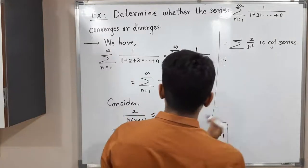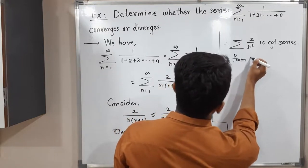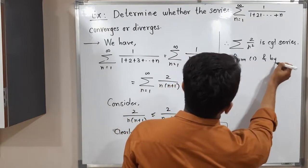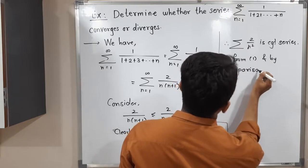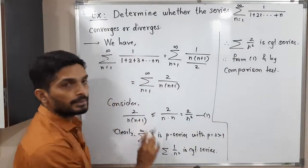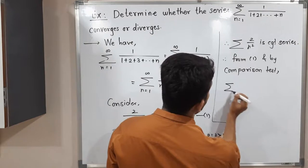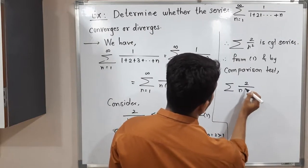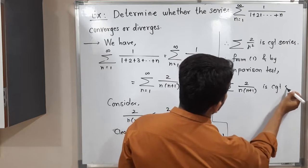Let me call this equation (1). Therefore from (1) and by comparison test, as this series is convergent and the lower series is also convergent, summation 2/(n(n+1)) is a convergent series.